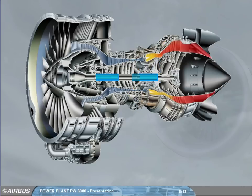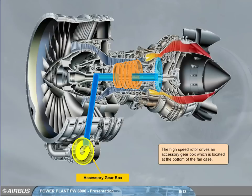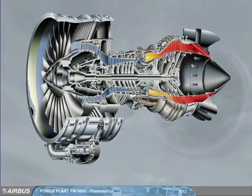The high speed rotor drives an accessory gear box, which is located at the bottom of the fan case. The combustion chamber has two igniters.